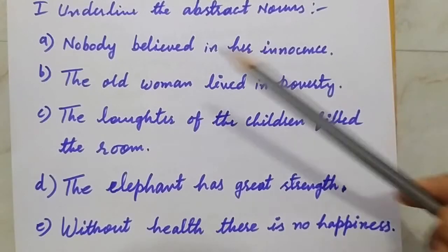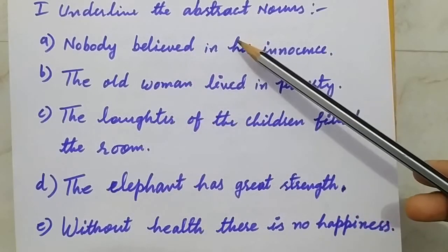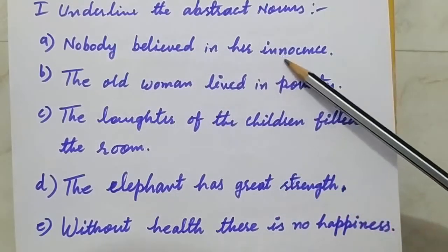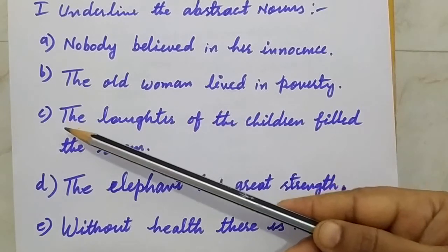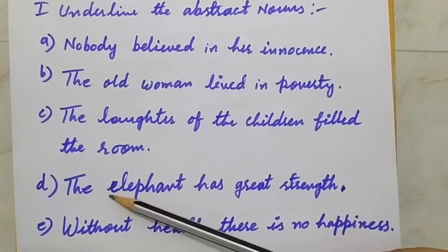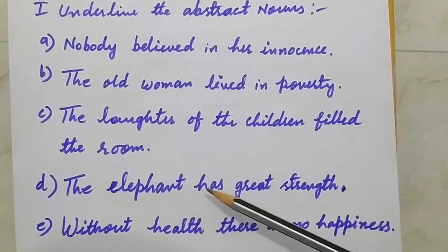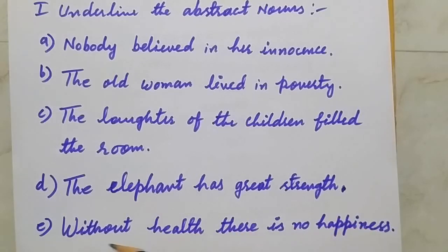So children, here is a homework for you: underline the abstract nouns in the following sentences. A: Nobody believed in her innocence. B: The old woman lived in poverty. C: The laughter of the children filled the room. D: The elephant has great strength. E: Without health, there is no happiness. Read the sentences, understand them, and underline the abstract nouns. Okay, so for today enough. Thank you children, God bless you.